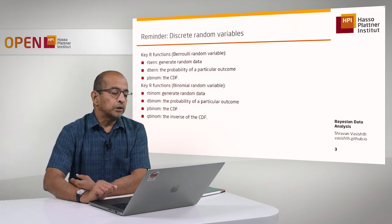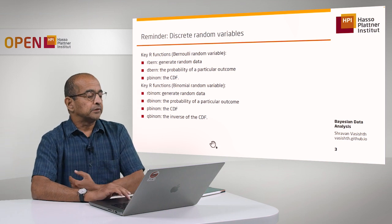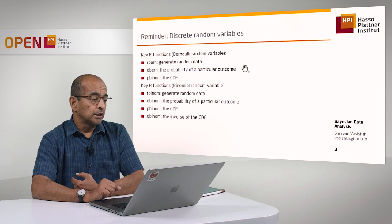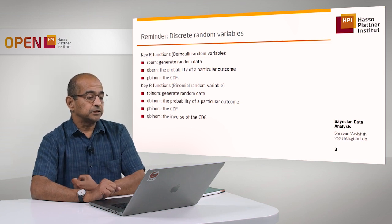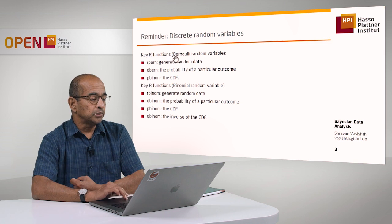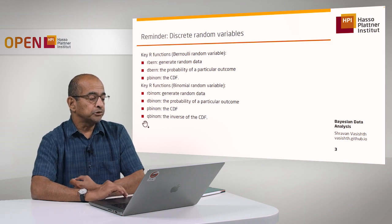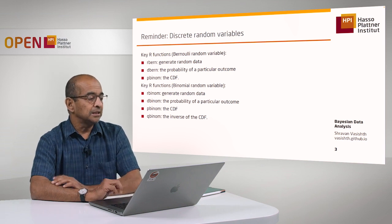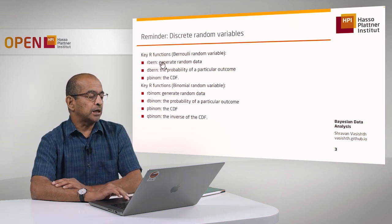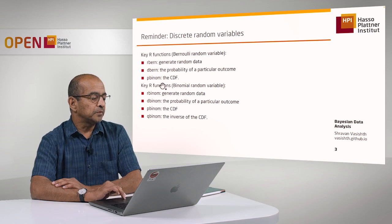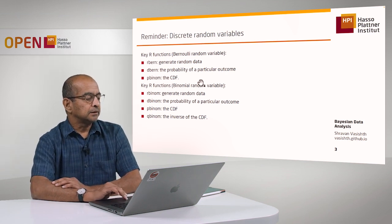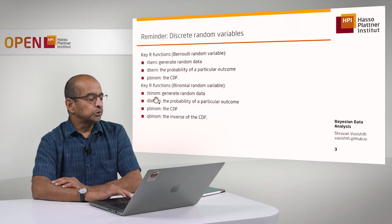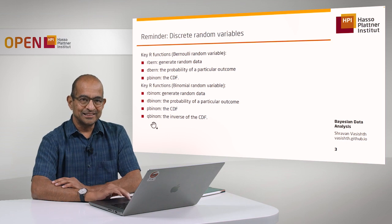Now we are going to talk about continuous random variables, building on what we've learned from discrete random variable theory. In the Bernoulli and the binomial, I showed you the classic DPQR families of functions in action. With the Bernoulli, I showed you R-Bern, D-Bern, and P-Bern. And in the binomial, I showed you the full range of possibilities.